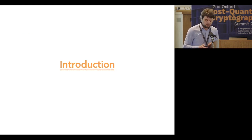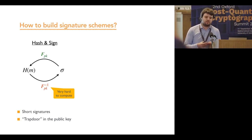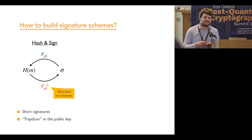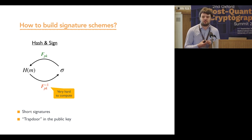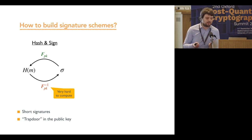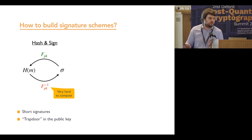To start, a quick introduction. To build signature schemes, there are two approaches. The first approach is the hash-and-sign paradigm, where the signer has a trapdoor to invert a one-way function, and uses it to build the signature on a message. The verifier just needs to apply the one-way function to verify. This produces short signatures, but since there is a trapdoor in the public key, it often leads to a large public key — as with UOV from the first session.